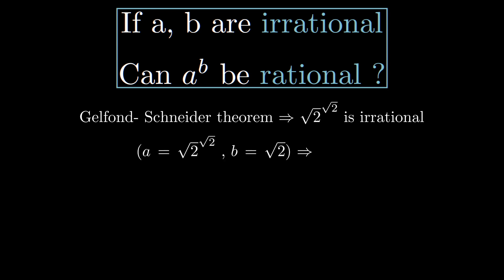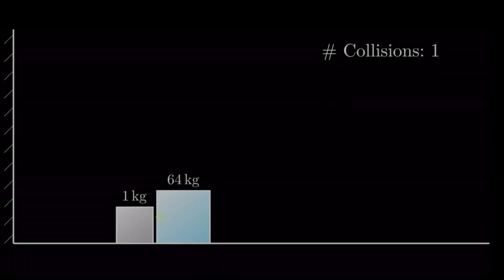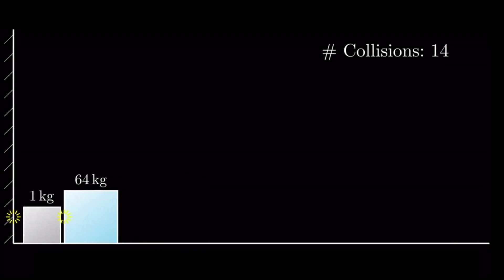If we pick the second number to be root 2, we realize that a to power b is rational. Right, but is there a proof which does not require a PhD in number theory?